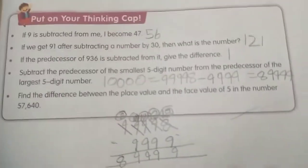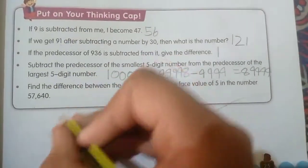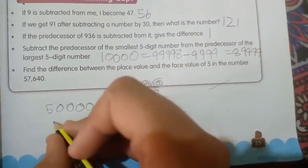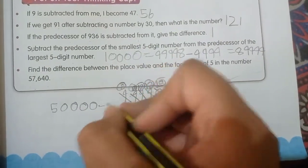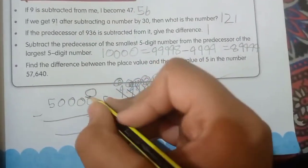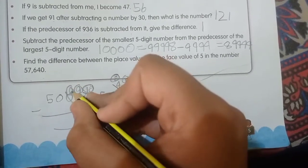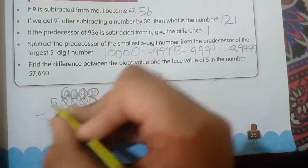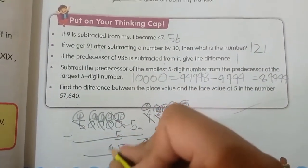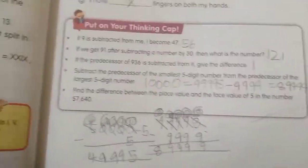Find the difference between the place value and face value of 5 in the number 57,640. So place value is 50,000 and the face value is 5. So we have 50,000 minus 5, which equals 49,995.